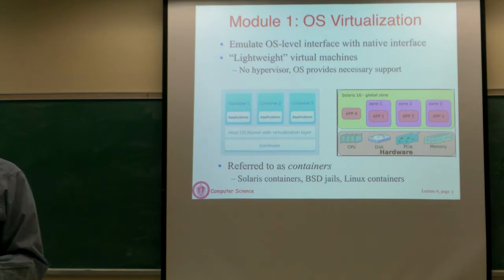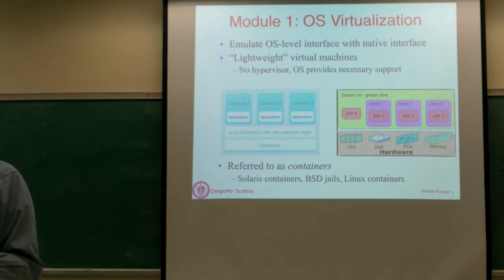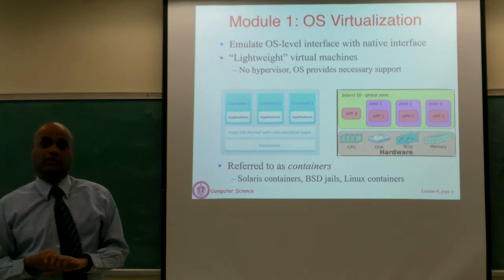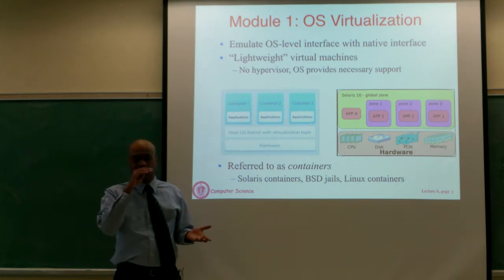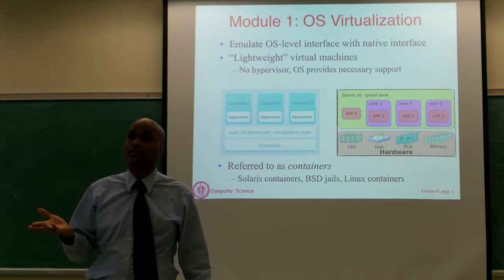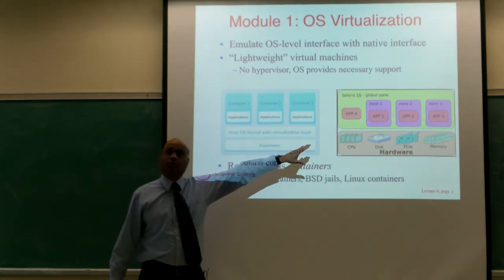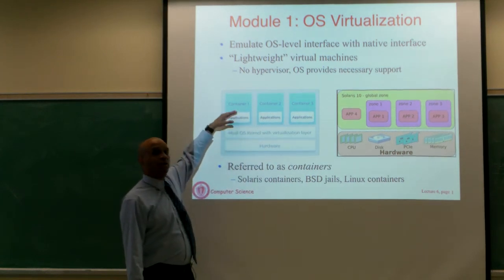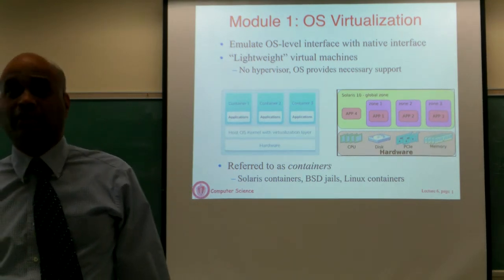What's the key difference between this and what we were talking about last time? There's no guest operating system — that's the most important difference. When you have hardware-level virtualization, you get the abstraction of an entire machine emulated by the virtualization layer; you have to first run an OS inside the VM and applications run there. When you have containers, you don't actually run an OS inside those VMs. The OS is the same as what is running on the actual machine. You just run applications in there, and the container simply uses the OS services of the underlying OS. There is no guest operating system running inside the container.